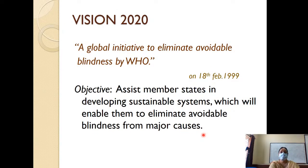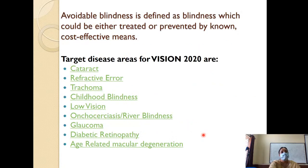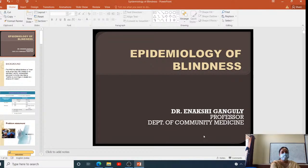In 2010, Pfizer had donated about 225 million doses of Zithromax or azithromycin treatments. No blindness control discussion can end without description of Vision 2020 - there is a list of target disease areas including cataract, refractive errors, and other causes known to be easily preventable. That covers the blindness section; now we quickly move to biomedical waste rules.